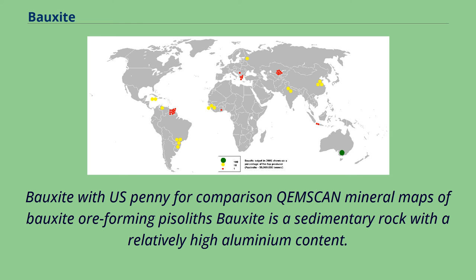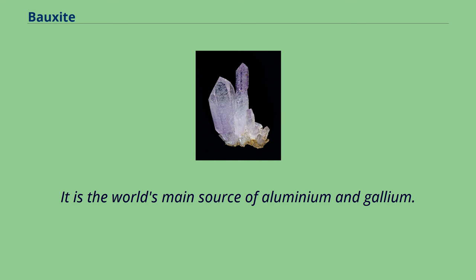Chemscan mineral maps of bauxite ore-forming pisolites. Bauxite is a sedimentary rock with a relatively high aluminium content. It is the world's main source of aluminium and gallium.